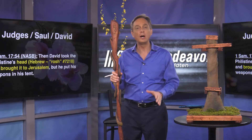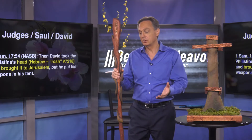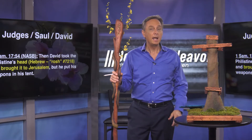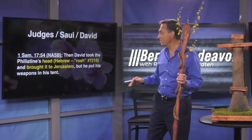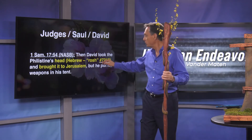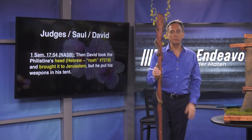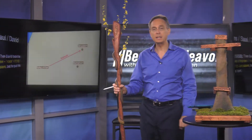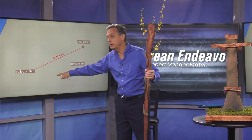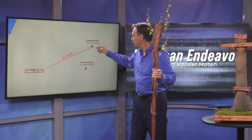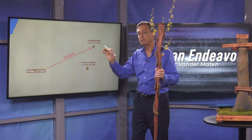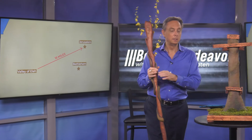David takes the head of Goliath and chops it off. The Philistine army flees, the armies of Israel chase them, and exactly what David said would happen, happened. Verse 54 says David took the Philistine's head — Hebrew word rosh — and brought it to Jerusalem. He carried it 16 miles over rugged terrain from the Valley of Elah and deposited it in Jerusalem. Rosh means head, like head of the year — Rosh Hashanah.